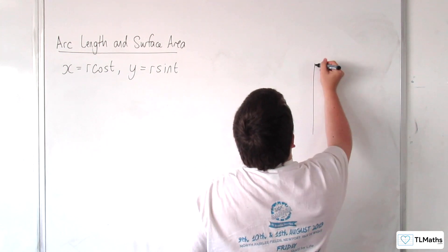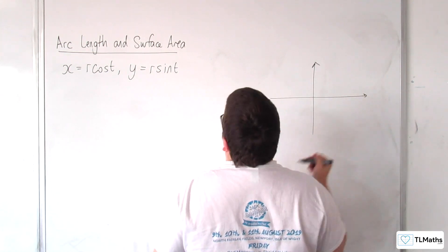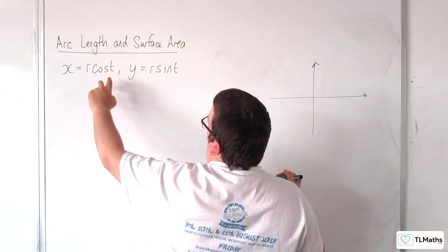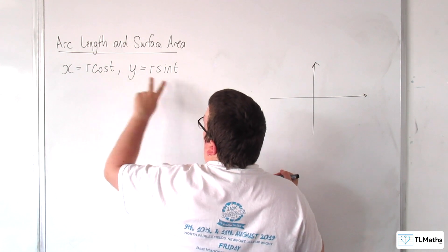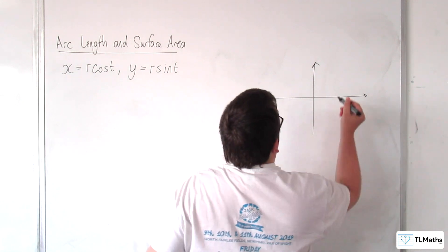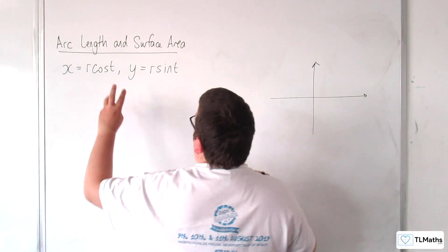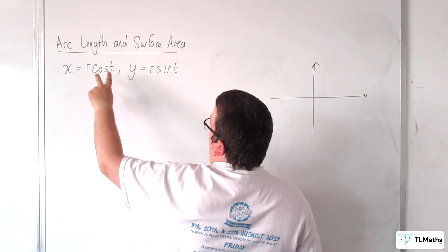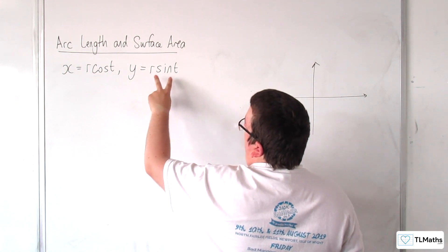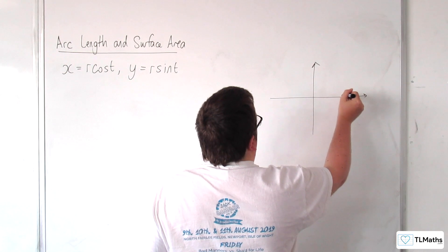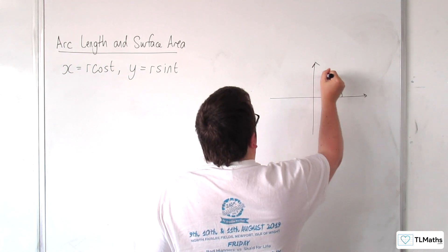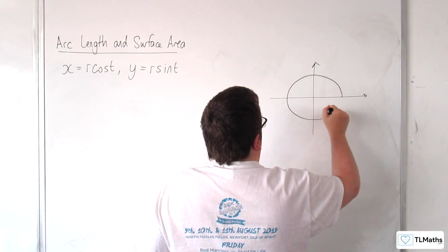So let's just draw this out. So when t is 0, we'll have r and 0, so starting there. And when t is π over 2, we're going to have 0 and r, so up here, so it's tracing out a circle like that.